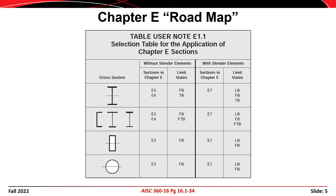The first thing you see in Chapter E is a user note — a large table I like to refer to as the road map. It gives you the cross section in the first column and then points you to the appropriate provision specifications, letting you know which limit states you should check based on that cross section and whether or not your cross section has slender elements.